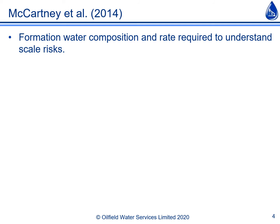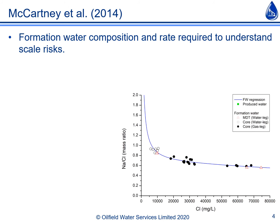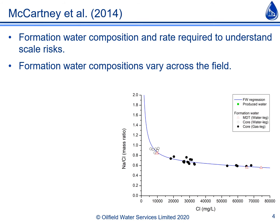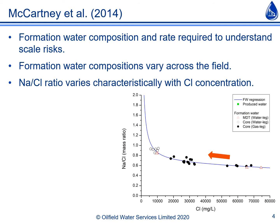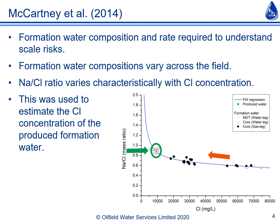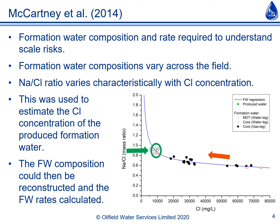To understand the cause of scaling in the well it was first necessary to simulate the production conditions to calculate the scaling risks, but the composition of the formation water flowing into the well and its rate of flow were required for these calculations. Fortunately, formation water samples had been obtained from the reservoir — centrifuged from core samples and collected during MDTs. The figure shows the sodium-over-chloride ratio of these formation waters plotted against their chloride concentrations, with a regression line through the data. Formation water compositions vary across the field, and the sodium-over-chloride ratio increases at lower salinities. Since the sodium-over-chloride ratio does not change when formation water is mixed with condensation water, comparing the average ratio of produced water samples with the regression line allowed estimation of the chloride content of the produced formation water. Using this and ion ratios in the produced water, it was possible to reconstruct the complete produced formation water composition, and by comparing this with the produced water composition and using the produced water rates, the formation water rates could also be calculated.